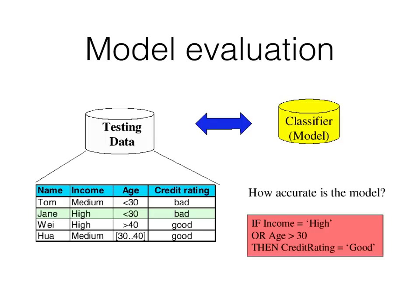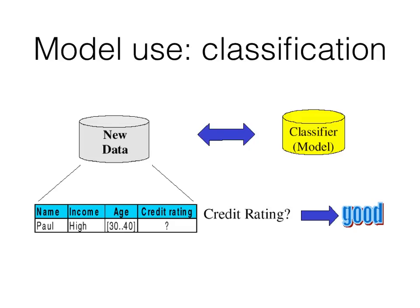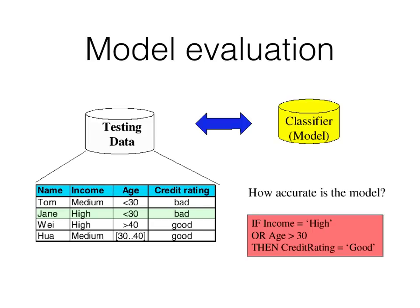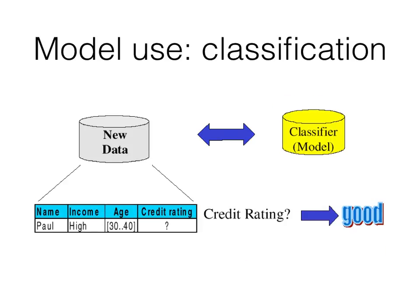Next we evaluate the model with four test data points. Our model is: if the income is high or the age is greater than 30, then the credit rating is good. It got three of them right — three out of four is 75% accurate. Then for using the classifier: a new data point named Paul has high income and age between 30 and 40. Putting it through the rule, the classifier says the credit rating should be good. All classifiers work exactly like this, except the way the classification model is built differs.